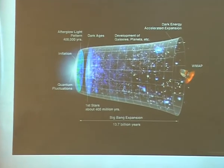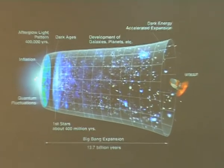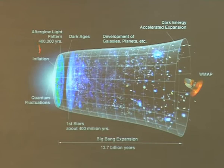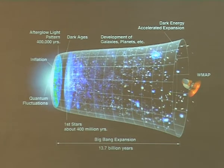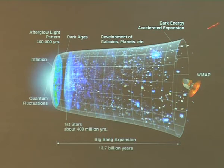There's a fair amount of information in this picture. You can see the universe inflated and expanded very quickly, then expanded, and now it's doing accelerated expansion. We think this is because of something we call dark energy — because we don't know what else to call it.